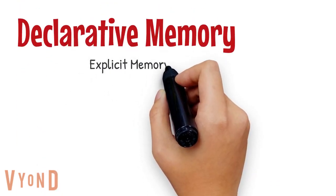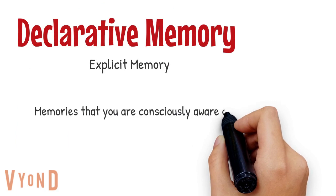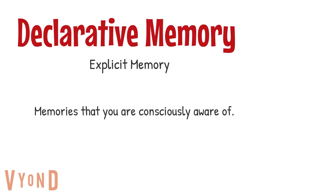Declarative or explicit memory is memory that you are consciously aware of. There are three types of declarative or explicit memories that I will highlight in this video.